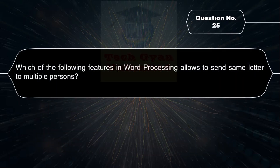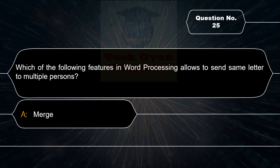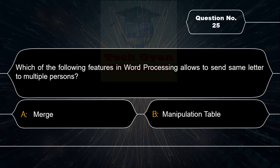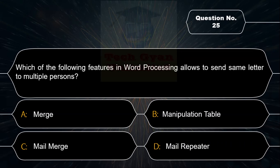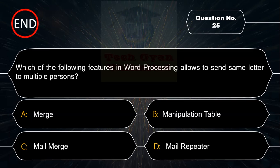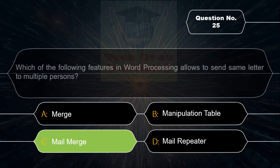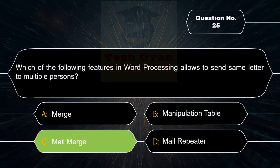Which of the following features in Microsoft Word Processing allows you to send the same letter to multiple recipients? Option A: Merge, Option B: Manipulation Table, Option C: Mail Merge, Option D: Mail Repeater. Correct answer is Option C — Mail Merge.